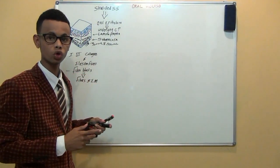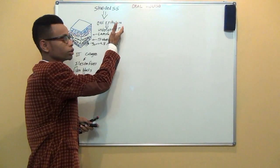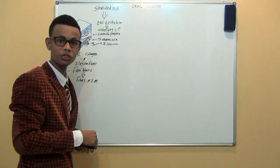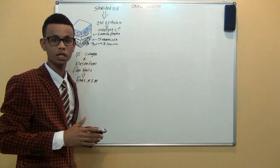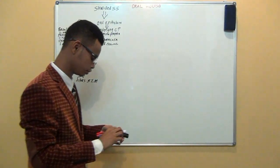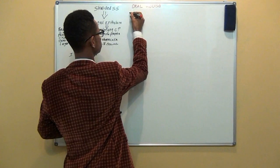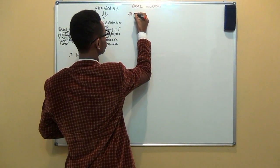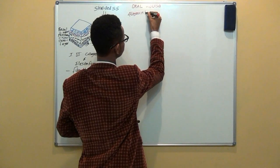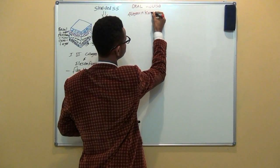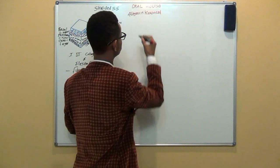The oral mucosa consists of two major parts: stratified squamous epithelium and connective tissue. The keratinized stratified squamous epithelium consists of four layers.